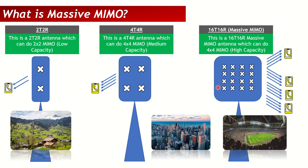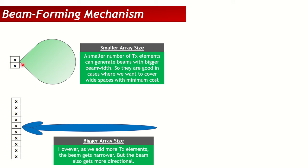Now let's understand the further complexities. With a normal 2T2R or 4T4R antenna, the beam generated is wide and covers a broad area. But when we add more elements to the antenna array and move towards massive MIMO, the beam gets narrower, more directive, and sharper. With fewer antenna elements the beam is wider but less directive; as we add more elements, phase differences between them allow generation of a much sharper, more directive beam.